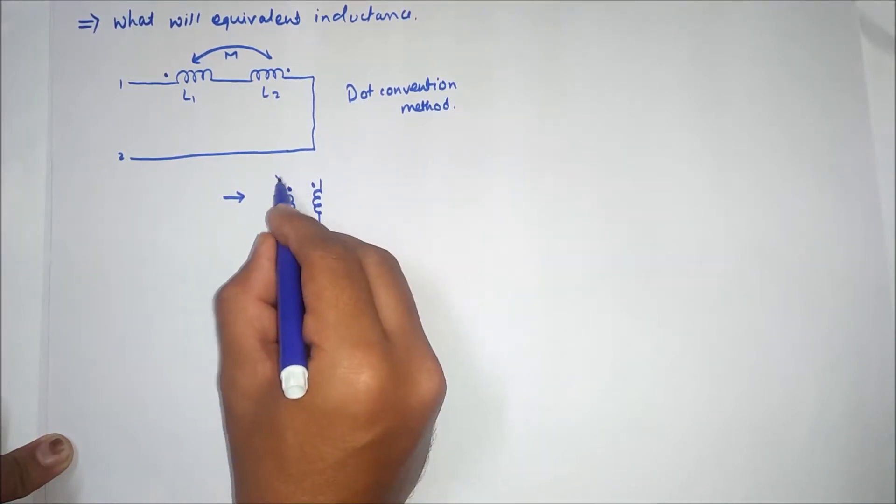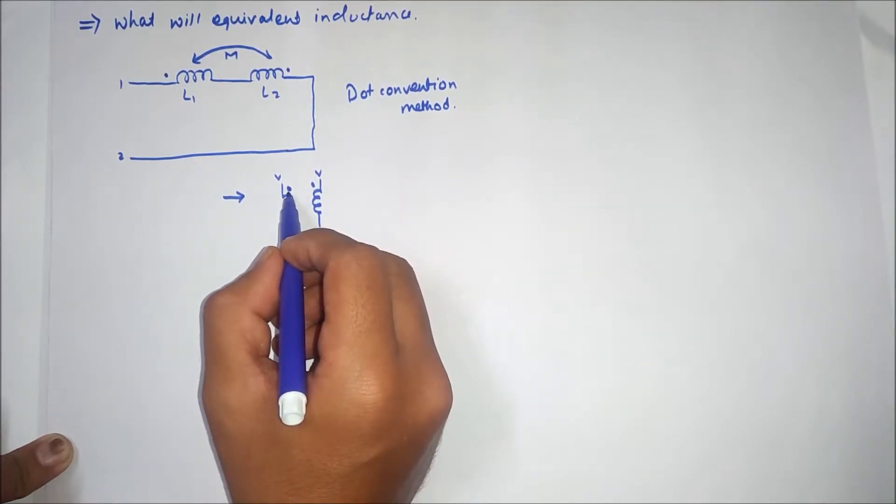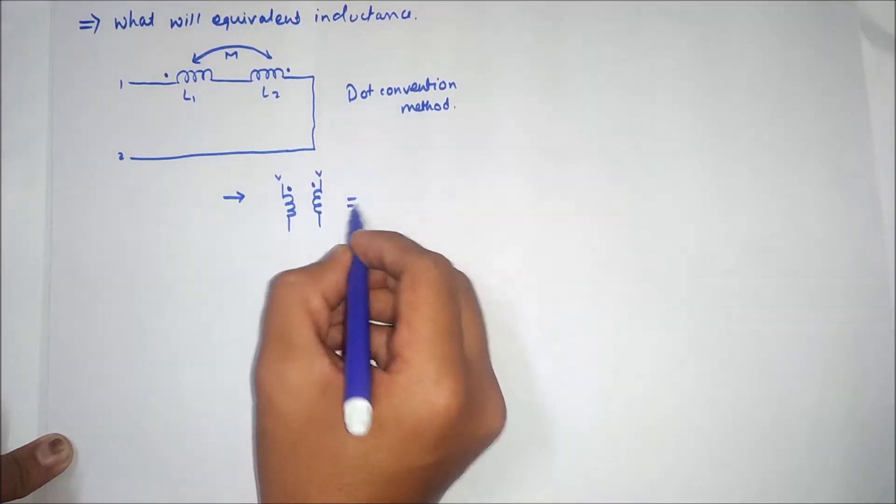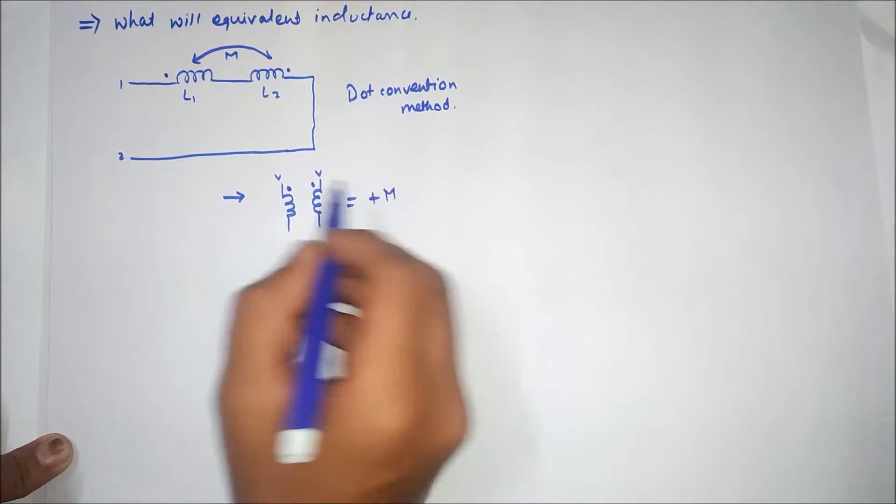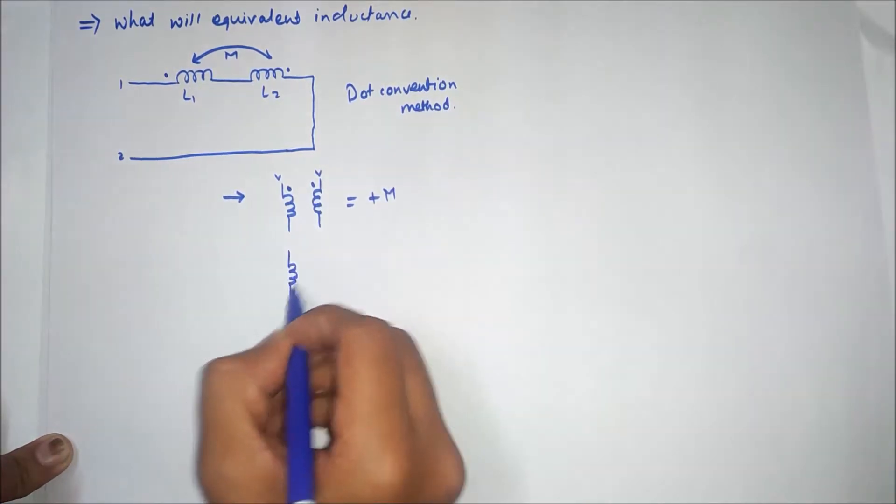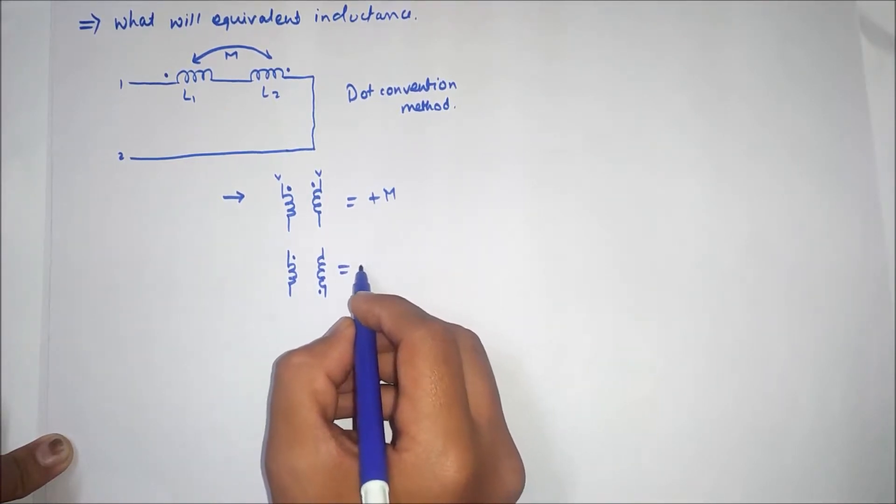If current enters from this side and the direction of the dot is same, then mutual inductance will be positive M. If the dot rule is opposite, if the dot has an opposite side, then the mutual inductance will be minus M.